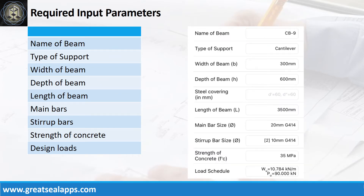Enumerate input parameters required. Name of beam: CB9. Type of support: cantilever. Width of beam: 300 mm. Depth of beam: 600 mm. Length of beam: 3,500 mm.